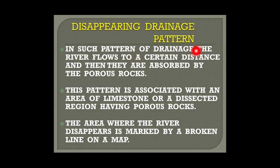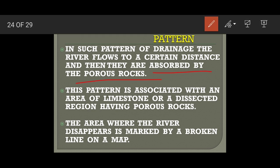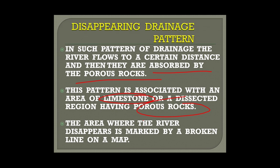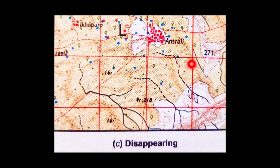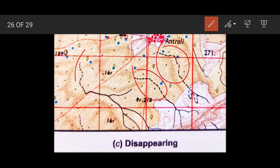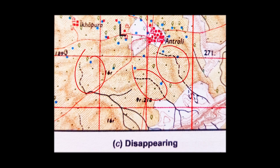The disappearing drainage pattern occurs where the river flows a certain distance and is then absorbed by porous rock, flowing underground. This happens mostly in areas of limestone or dissected regions with porous rock. On the map, the area where the river disappears is marked by broken lines showing the transition from surface to subsurface flow.